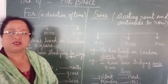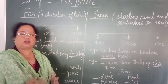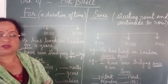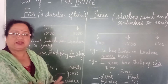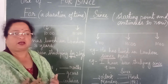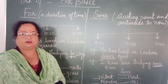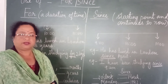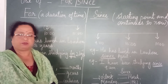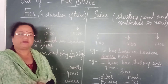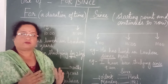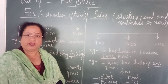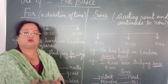Likewise children, 'since' is used when we start talking about something — that means the starting point of something. It can be used for a time, a date, when something started in the past and it continues till now. For example, 'He hasn't eaten since seven o'clock' — that means from seven o'clock he hasn't eaten anything till now. 'We have been friends since 2002.'